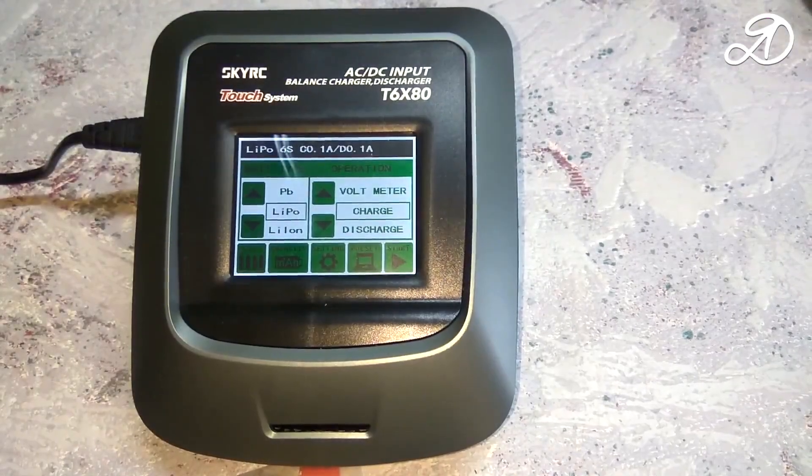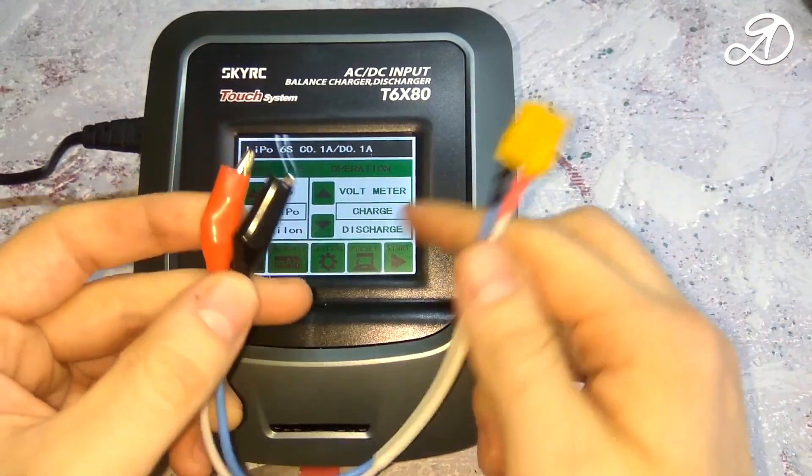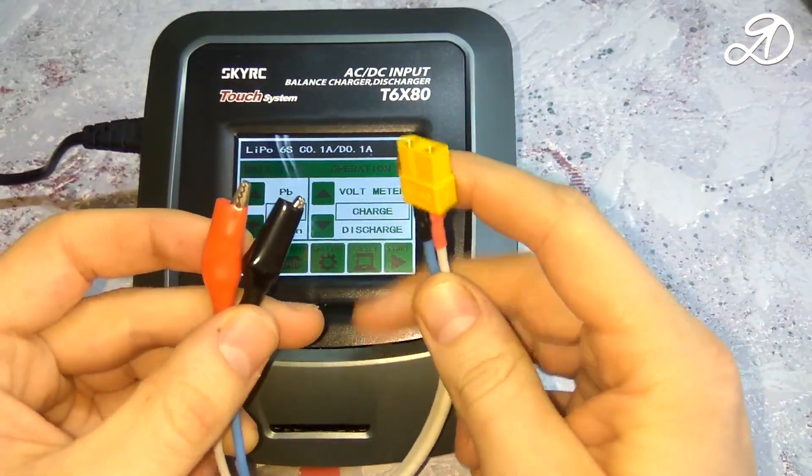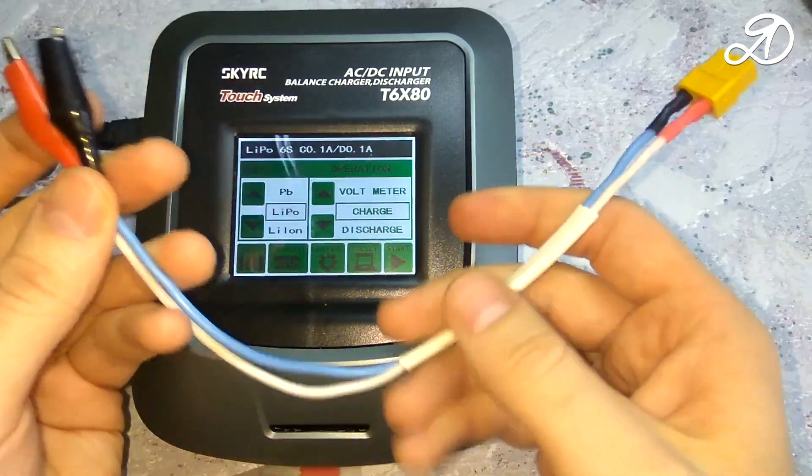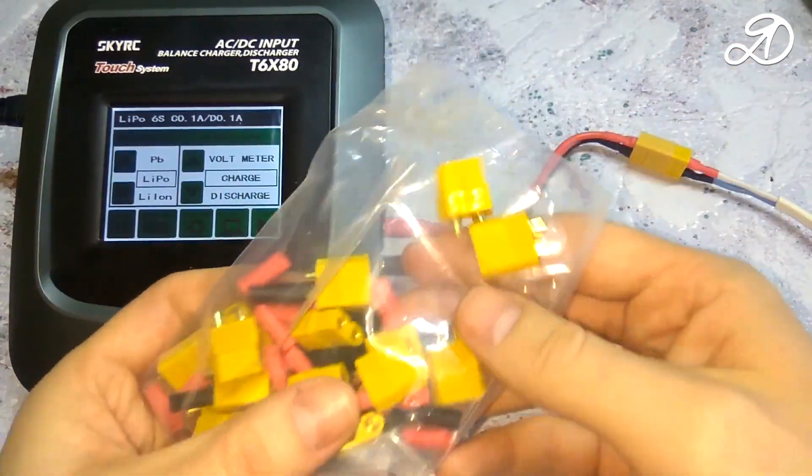There are no crocodile clips in the kit, so I made this adapter myself. To do this, I used an XT60 connector and a 2.5 mm network cable. I bought the connector separately.